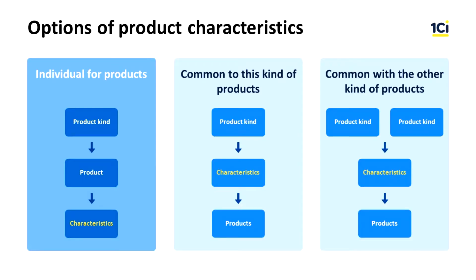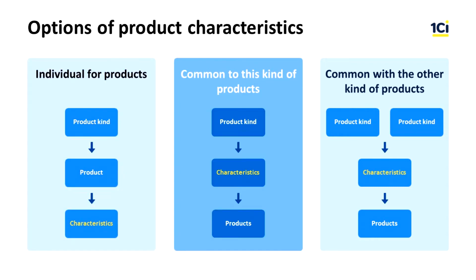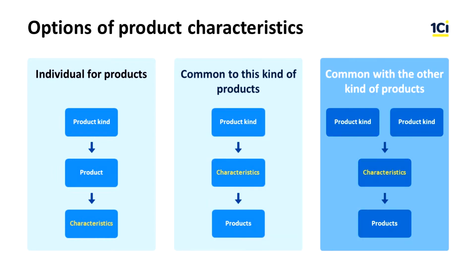Characteristics can be used in three ways. First, individual for products: individual characteristics are created for each product item, and the characteristics are defined in the product card. Second, common to these kind of products: all products within the same product kind have the same characteristics, and the list is set at product kind level. Third, common with other kinds of products: all products within two or more product kinds share the same characteristics, and when you create a product kind, it inherits the characteristics of another product kind. It is always preferable to use characteristics common to the product kind or common with other kinds, allowing you to define, for example, a single line of sizes for all products of that kind.